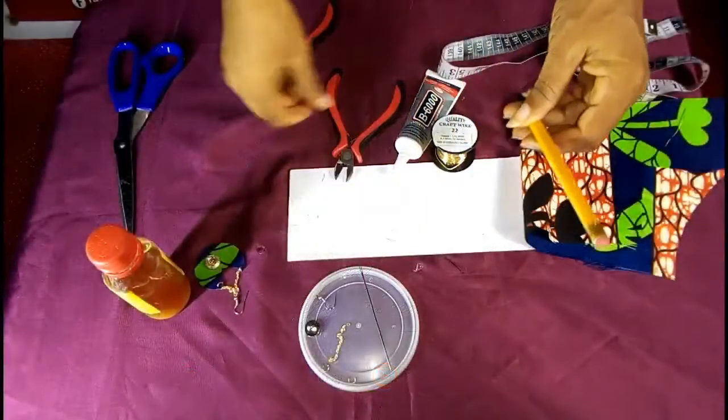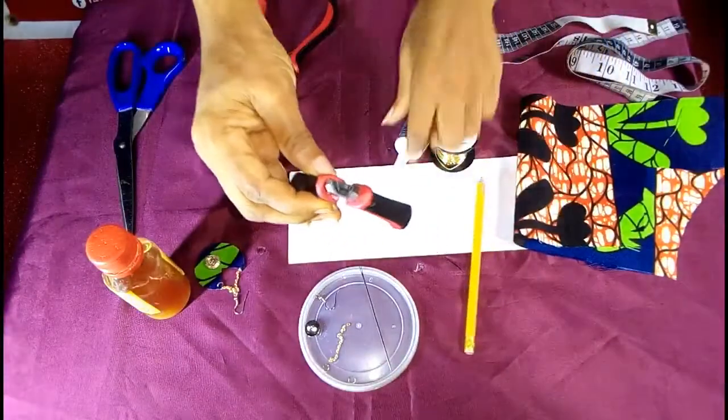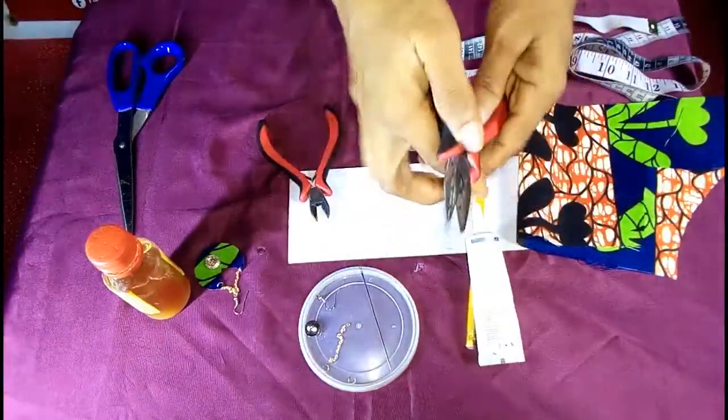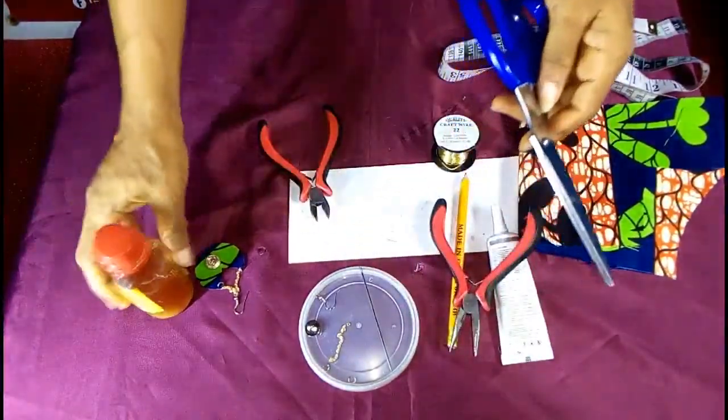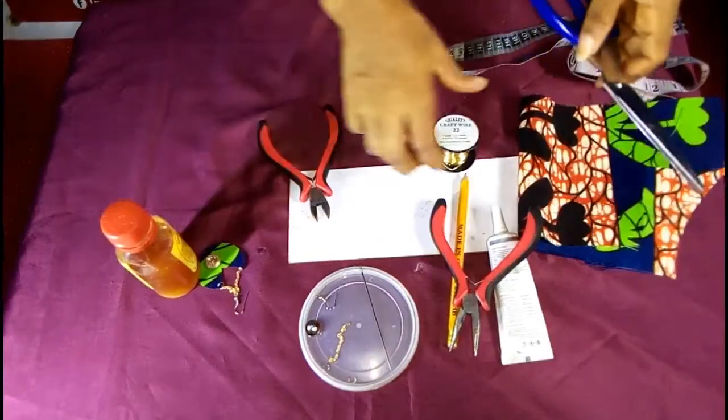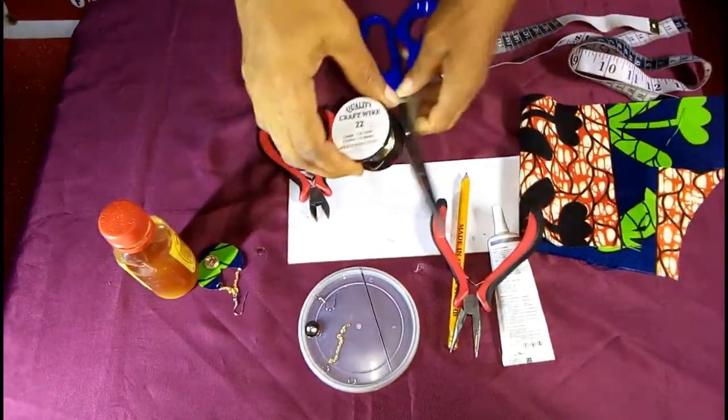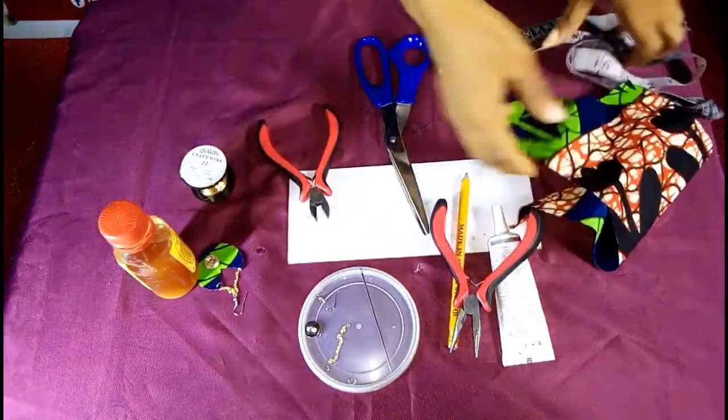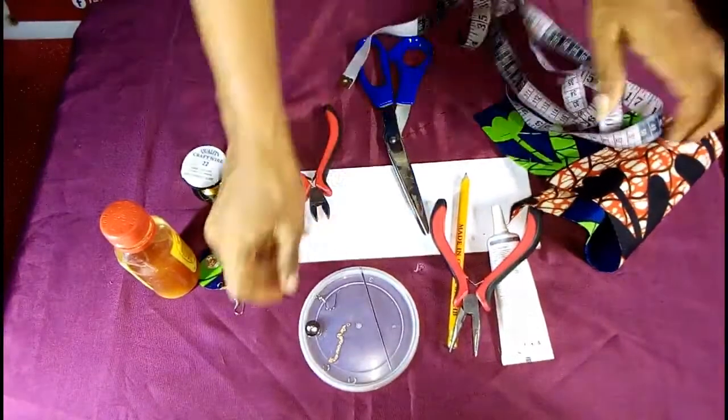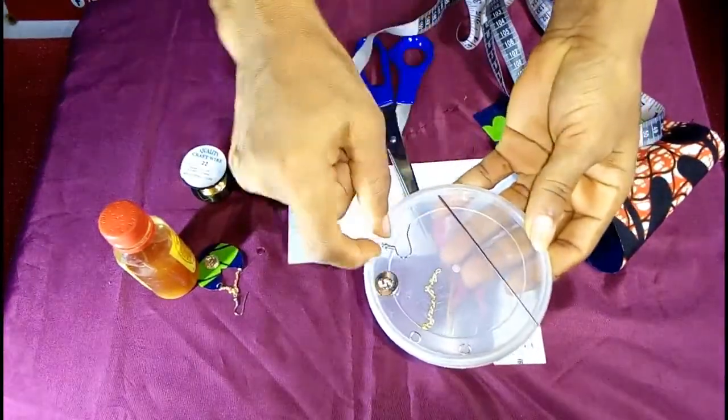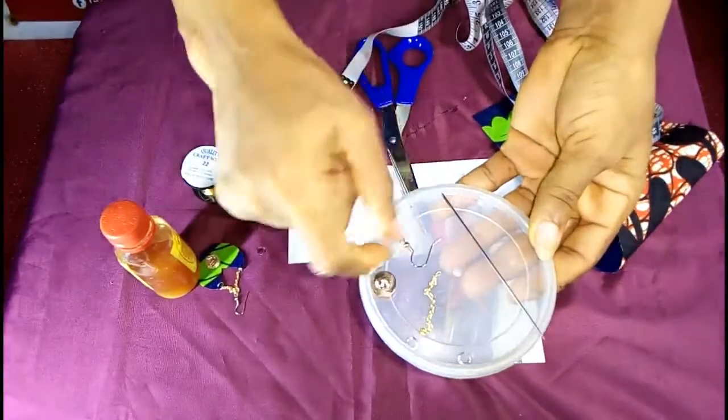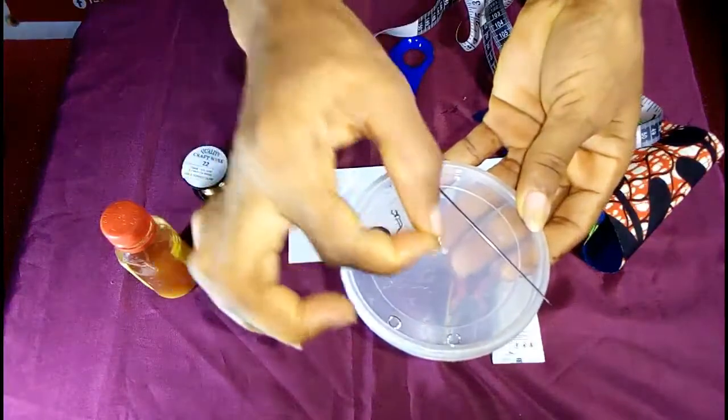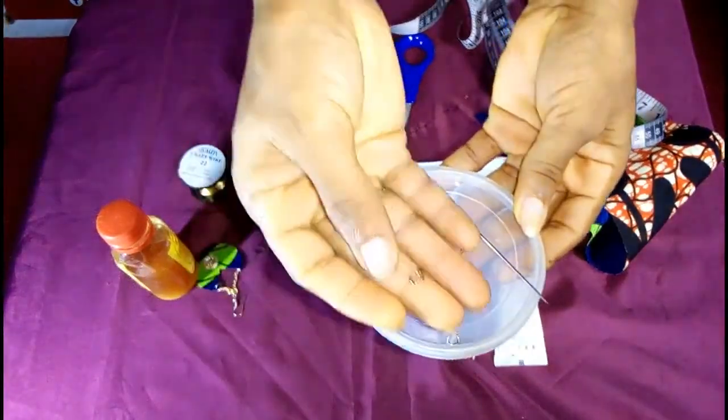Okay, we need a pencil, cutter, B6000 glue, pliers, scissors, Shoemaker's glue, a round surface, fabric, measuring tape, needle, earring hook, a button, chain, and a ring. We need two of these rings.